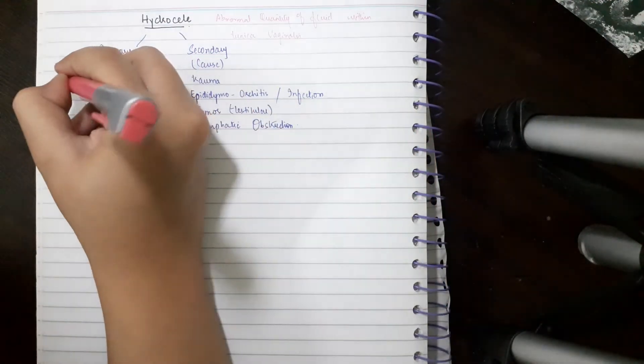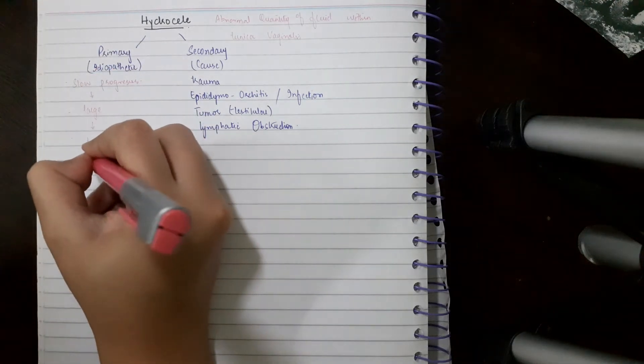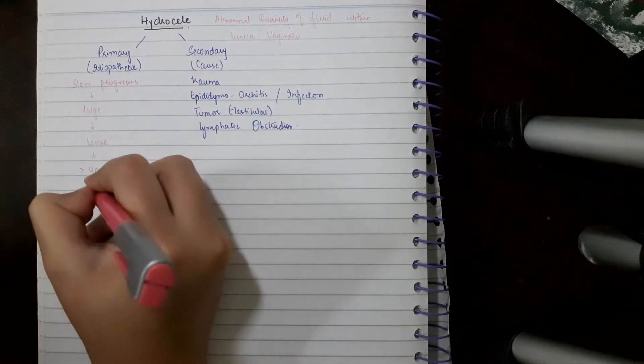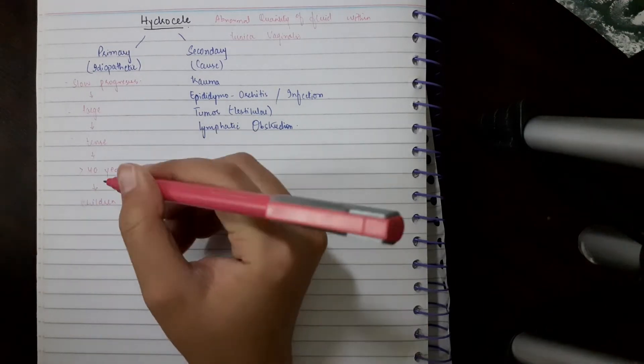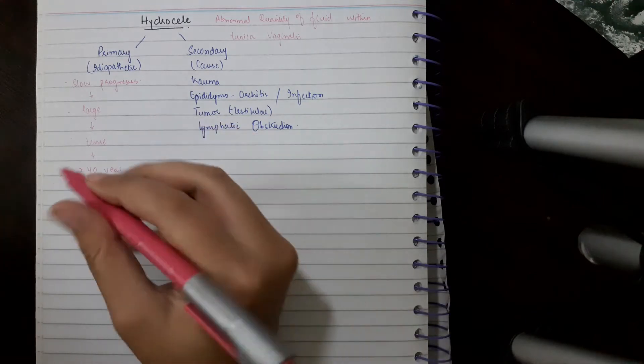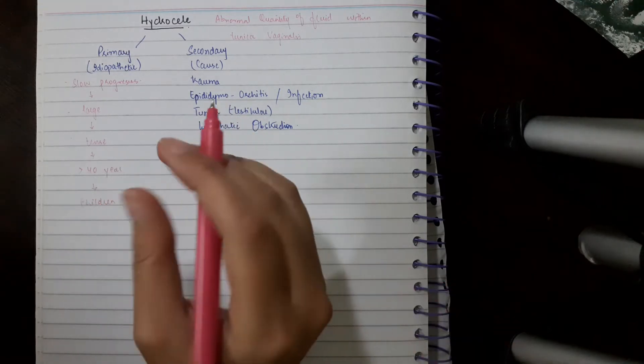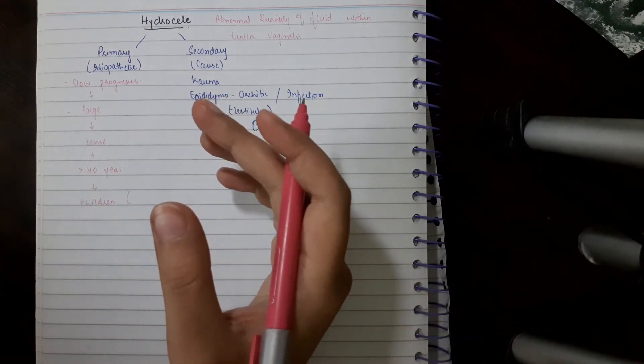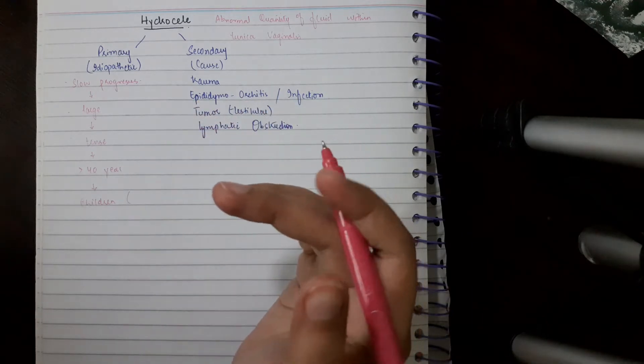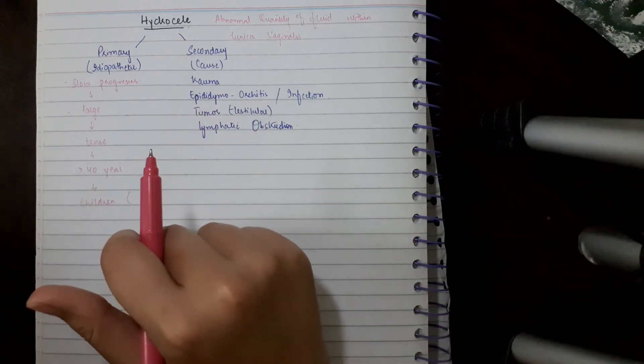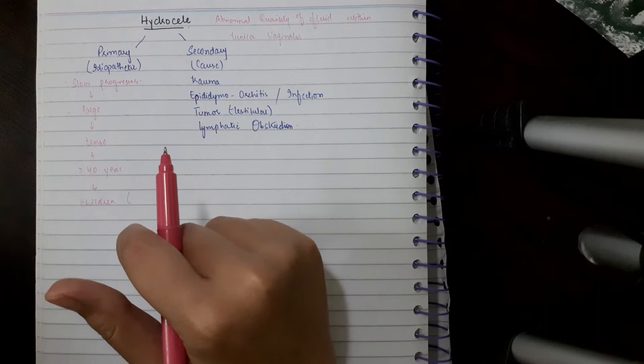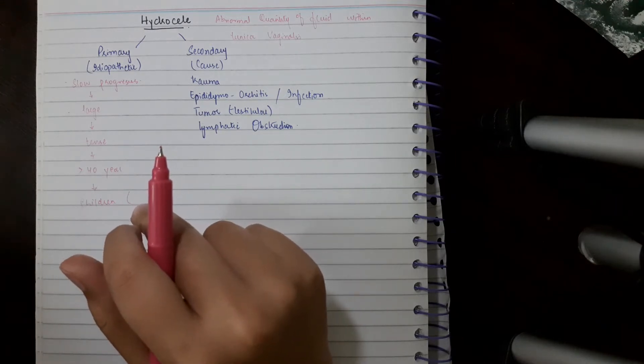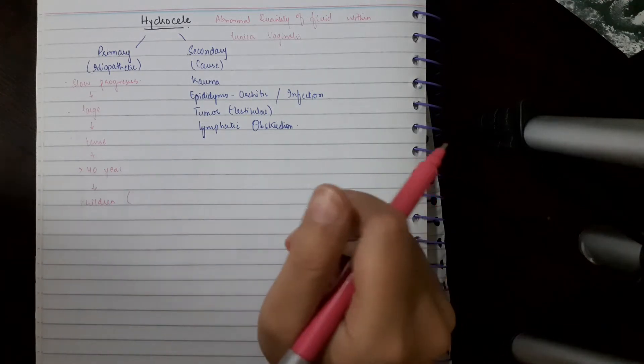It usually happens in more than 40 years of age and also in children. In children with primary idiopathic hydrocele, patent processus vaginalis is present, and there is also a variety of inguinal hernia with it as well. The swelling may be intermittent. It occurs in 2-5% of newborn males, and 90% of cases resolve within one year of age.